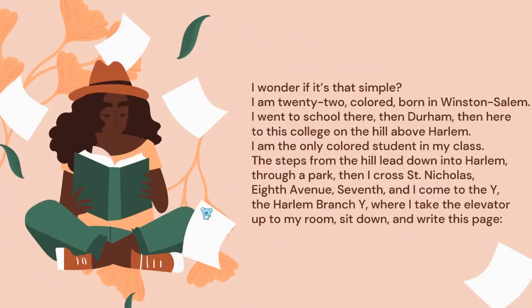The student wonders: 'I wonder if it's just that simple. I'm 22, colored, born in Winston-Salem. I went to school there, then Durham, then here to this college on the hill above Harlem.' Harlem is named as the location of the poem — that sense of locationality of the blacks within white society, how they were living at the heart of New York City, and now they have their own centrality.